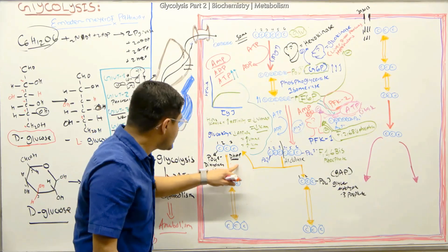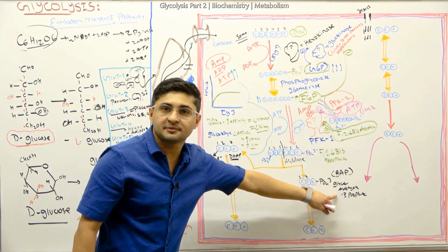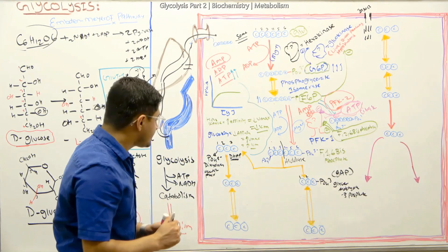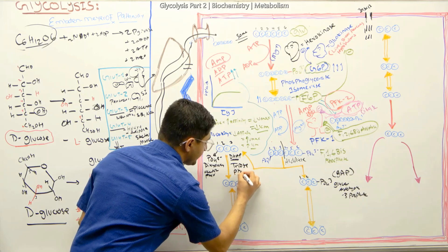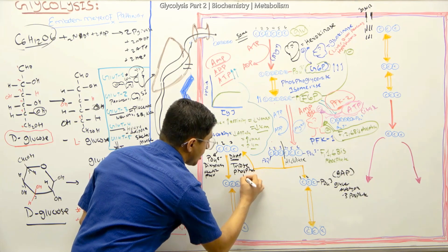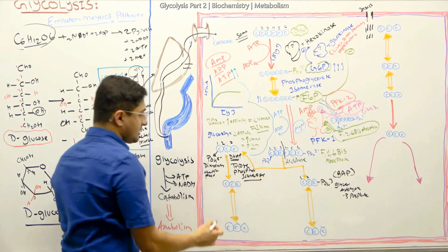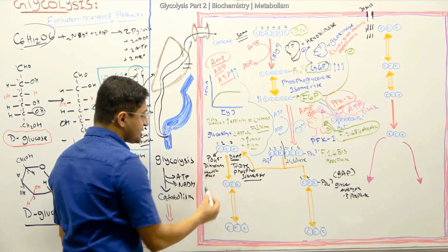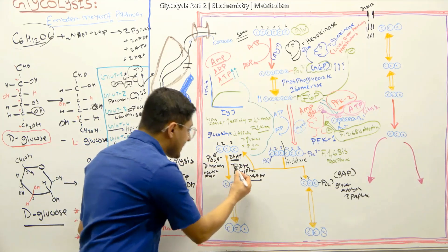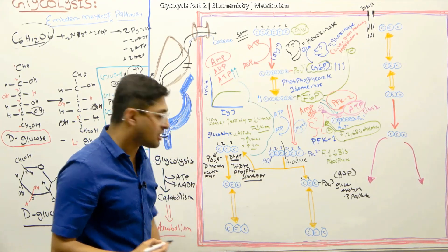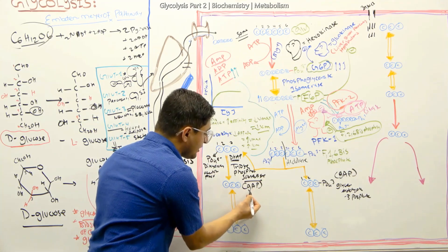Whenever we form DHAP, we can convert this DHAP and make glyceraldehyde-3-phosphate. How do we do that? There's a special enzyme called triose phosphate isomerase. It's an isomerase — basically what it is doing is rearranging the phosphate group and putting it into the third position. When you do that with this enzyme, which is triose phosphate isomerase, you make GAP, which is glyceraldehyde-3-phosphate.